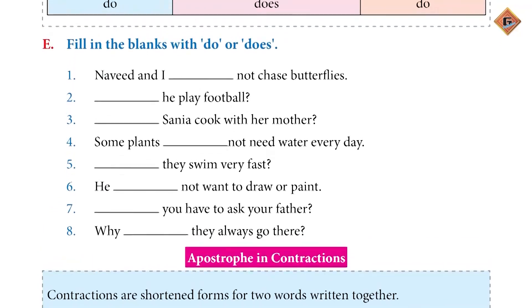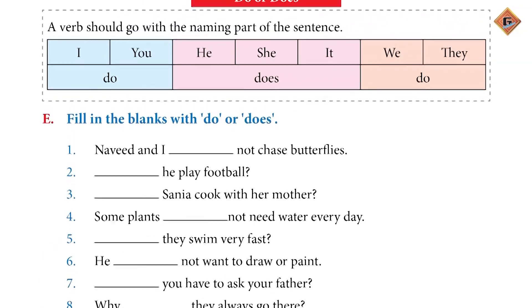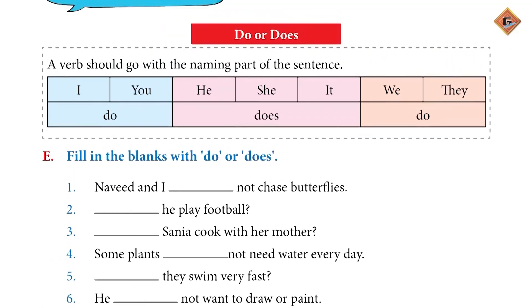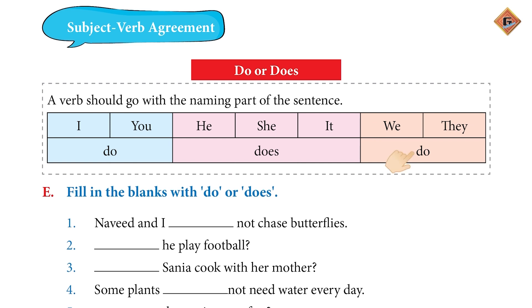We will talk about subject-verb agreement. We will use do or does. Now you can see, you have shown the table in this page. I and you use do; he, she, it uses does; and we and they use do.